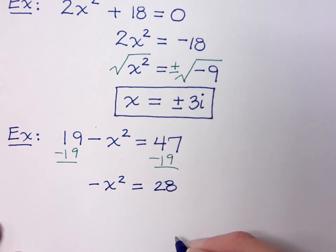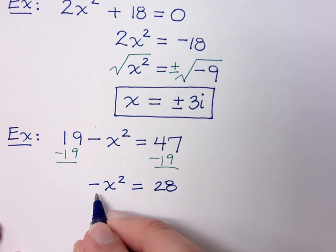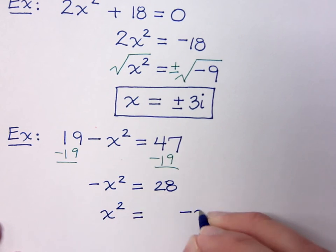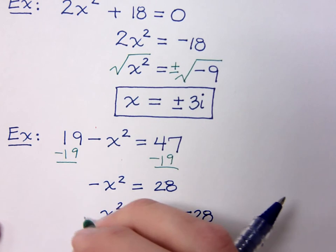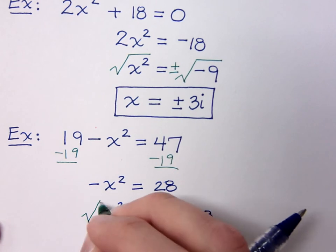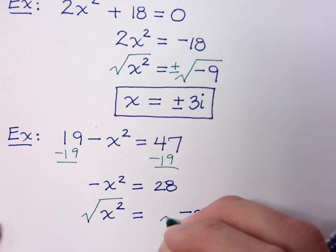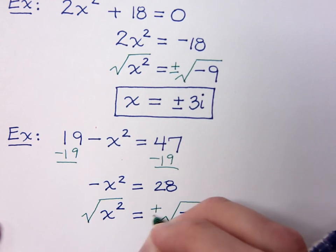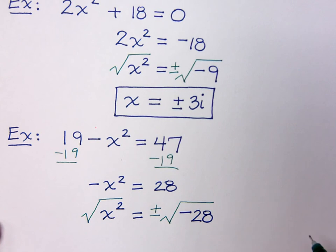That leaves me with a negative x squared equals 28. But you know that this is not good enough because I don't want negative x squared. I want just plain x squared. So, in order to accomplish that, we will divide both sides by the negative 1. And that's going to give me x squared equals negative 28. Now, I'm creating a little bit of a space here because we know that we need to do the square root of both sides. So, apply the square root property to both sides of the equation. And we're going to give it a plus or minus.